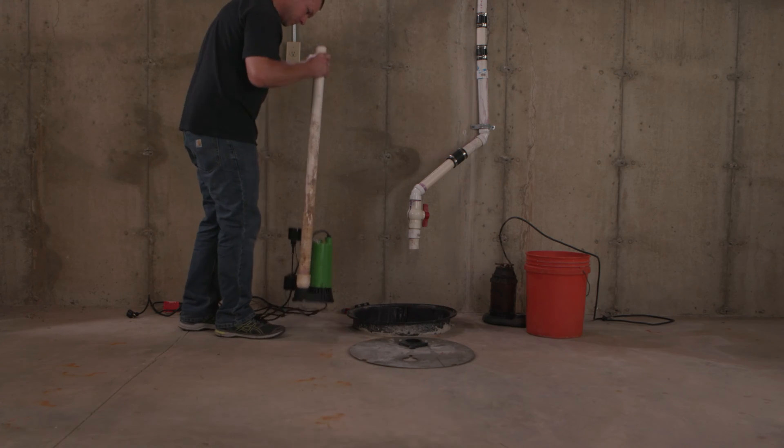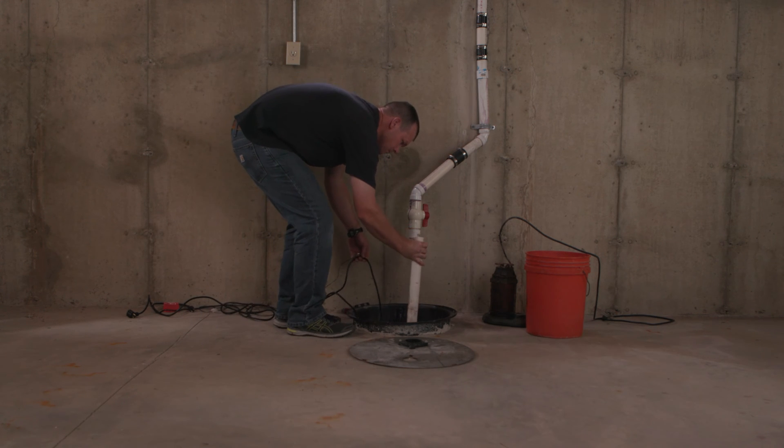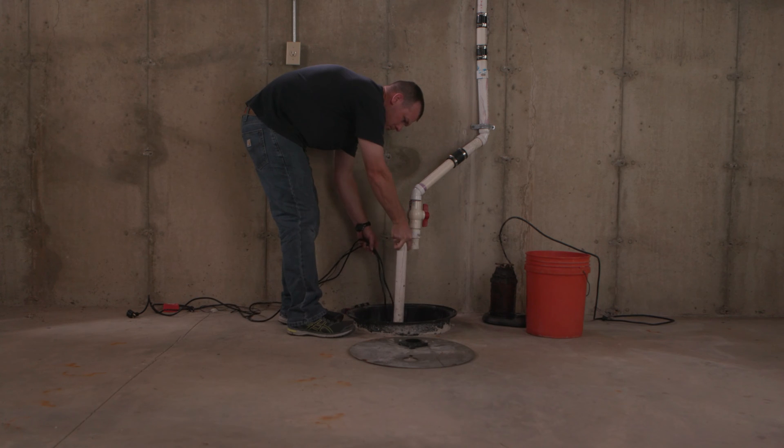Lower the smart pump with the connected discharge pipe into your sump pit. Leave the smart pump and the connected discharge pipe disconnected from the discharge system for now.